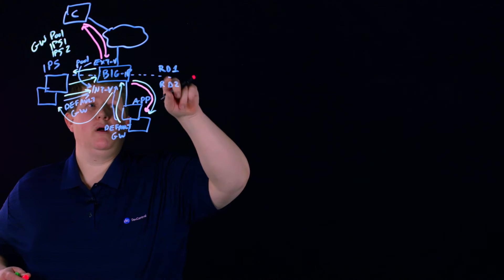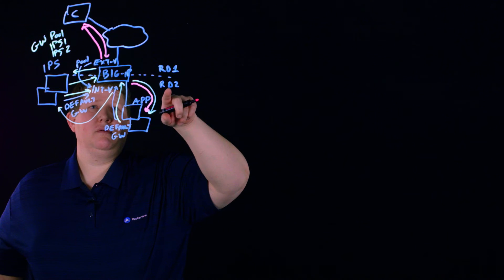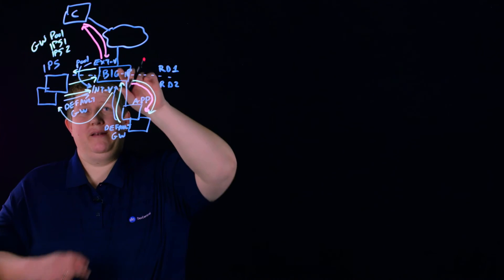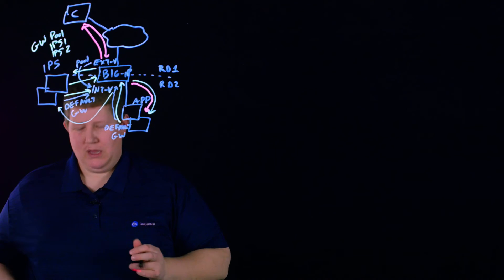That is one way. The external VIP is in route domain 1 and the internal VIP is in route domain 2, and that makes everything happy with the BIG-IP.